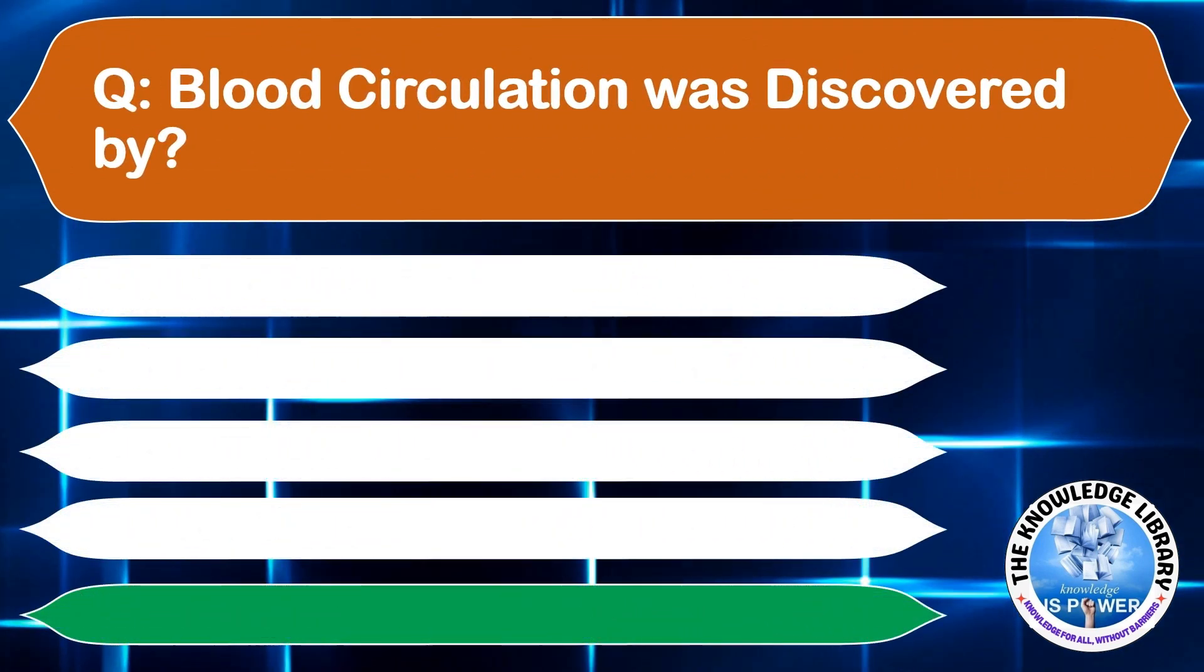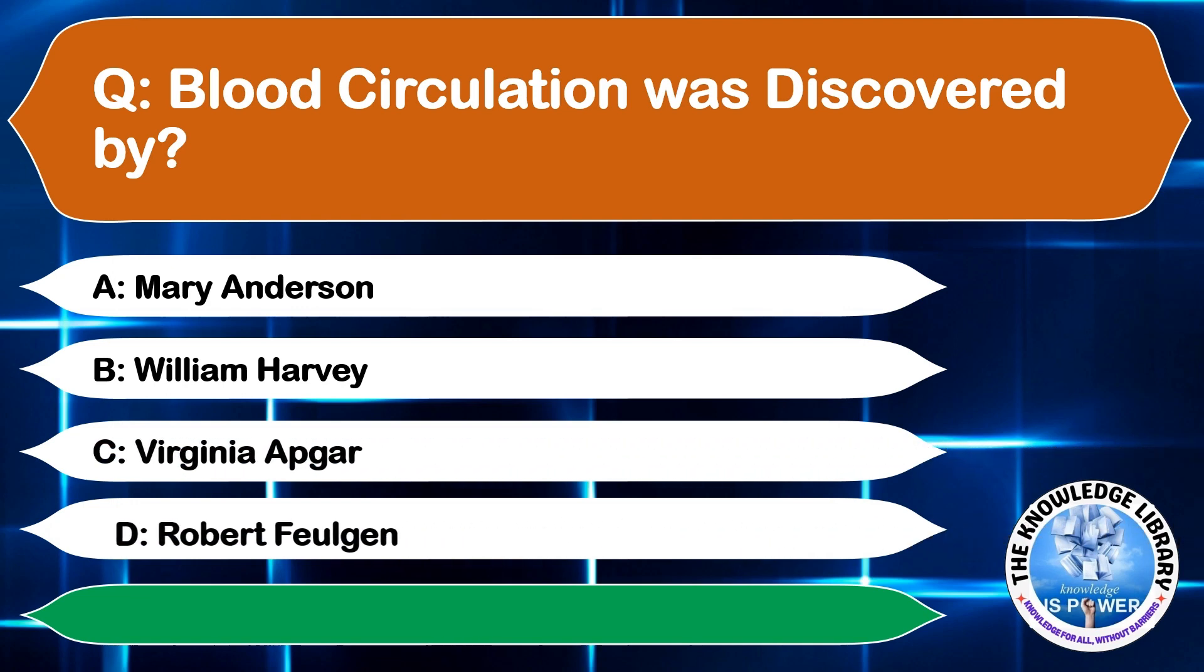Blood circulation was discovered by: A: Mary Anderson, B: William Harvey, C: Virginia Apgar, D: Robert Fulgar. The correct answer is option B, William Harvey.